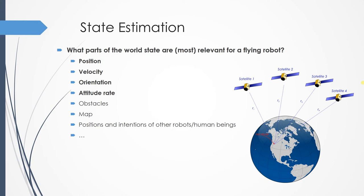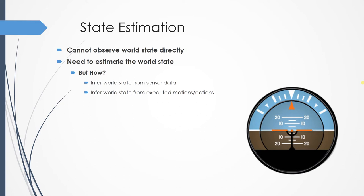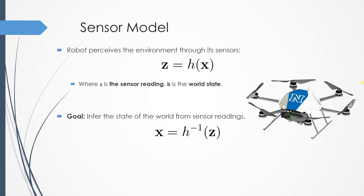As mentioned, we cannot directly measure this information. We need to infer it through sensors that depend on these states. Let's say that we have a sensor that sends a signal z, which depends on the actual state of the robot. We say we have a function h, which is typically non-linear. The goal is to somehow invert this equation. The goal is to infer x from z.